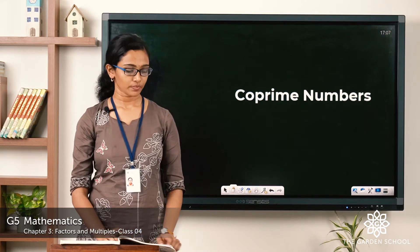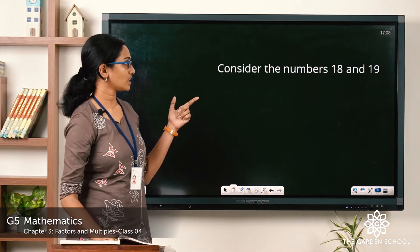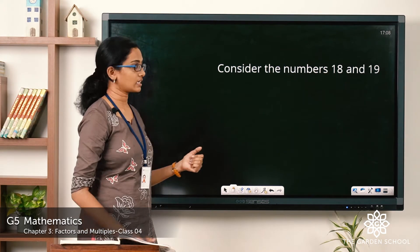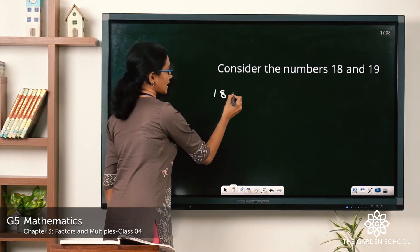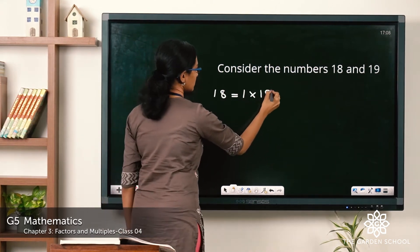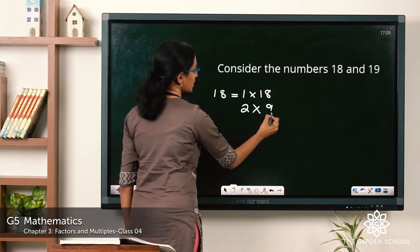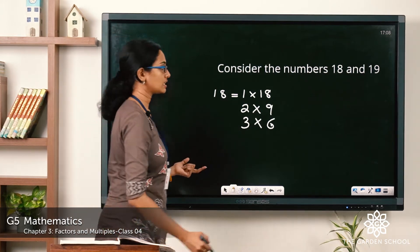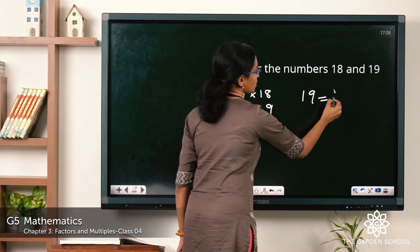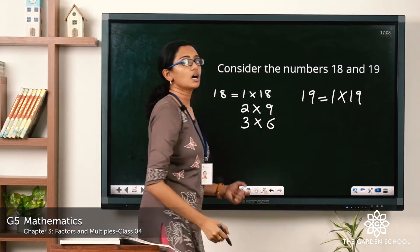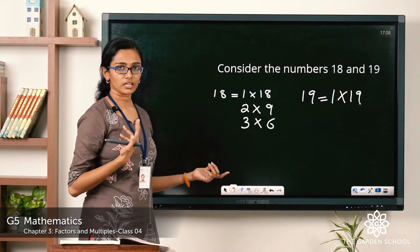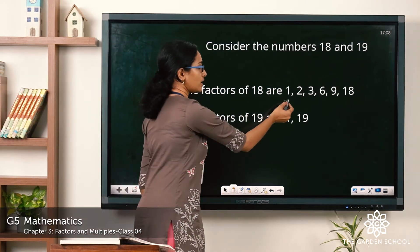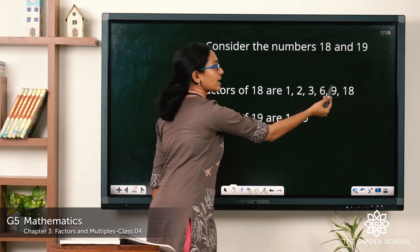Look at this example — we have two numbers, 18 and 19. Let's see the factors of 18 and 19. The factors of 18: 18 can be 1×18, or 2×9, or 3×6. What about the factors of 19? 19 is 1×19 — are there any other factors? No. So the factors of 18 are 1, 2, 3, 6, 9, and 18.